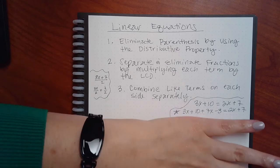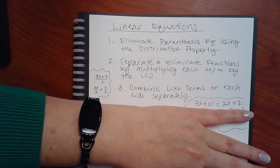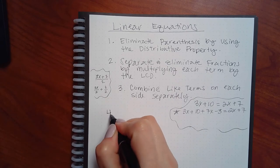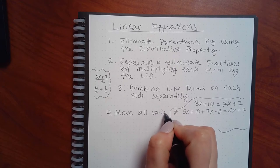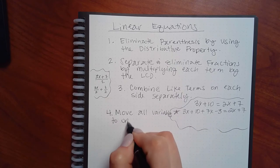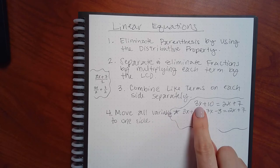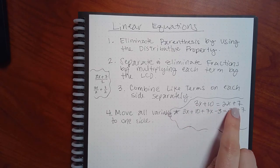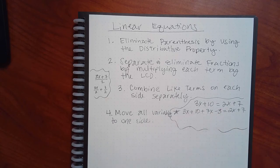Once you've done that, your equation should look like it has just x's and one constant on one side, and just x's and one constant on the other side. Then step four is to move all variables to one side. I like the left side, but it doesn't really matter which side you choose.